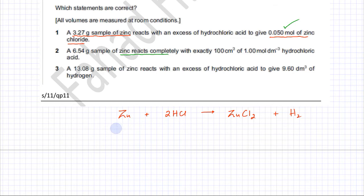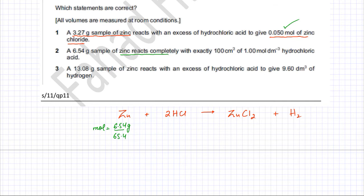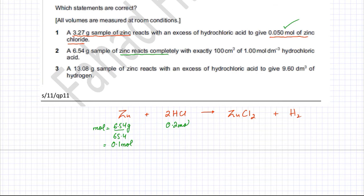You have 6.54 grams of zinc, which we convert into moles: mass divided by molar mass of zinc (65.4) gives 6.54 divided by 65.4, which equals 0.1 moles. Now, 1 zinc reacts with 2 HCl — a 1:2 ratio. So 0.1 moles of zinc is going to react with 0.2 moles of HCl. For a complete reaction, the amount of HCl should equal 0.2 moles.